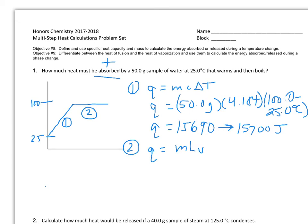For part two, this is where we actually boil the 50 grams of water. I'm going to use q equals m times L sub v. L sub v is the heat of vaporization and we're using that because we're talking about boiling. The heat of vaporization for water, 2260 joules per gram times my 50 grams. That's equal to 113,000 joules.